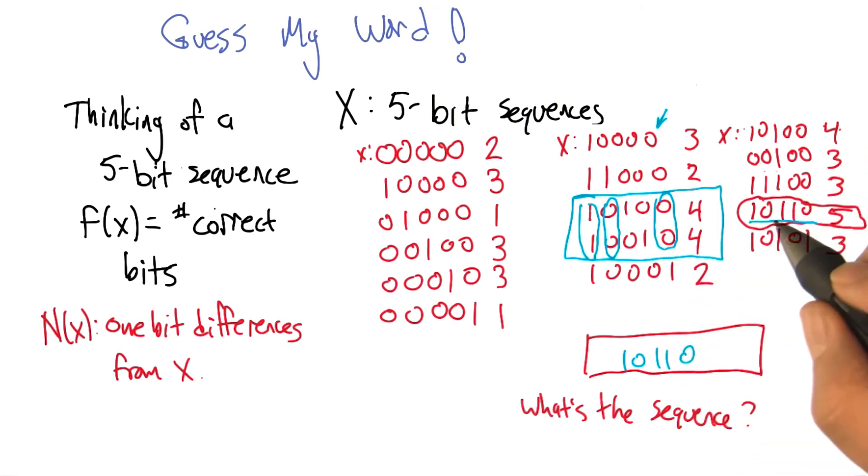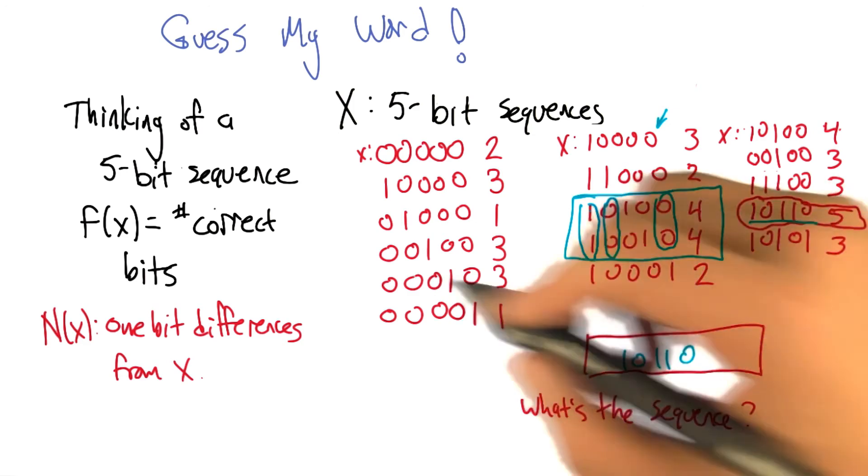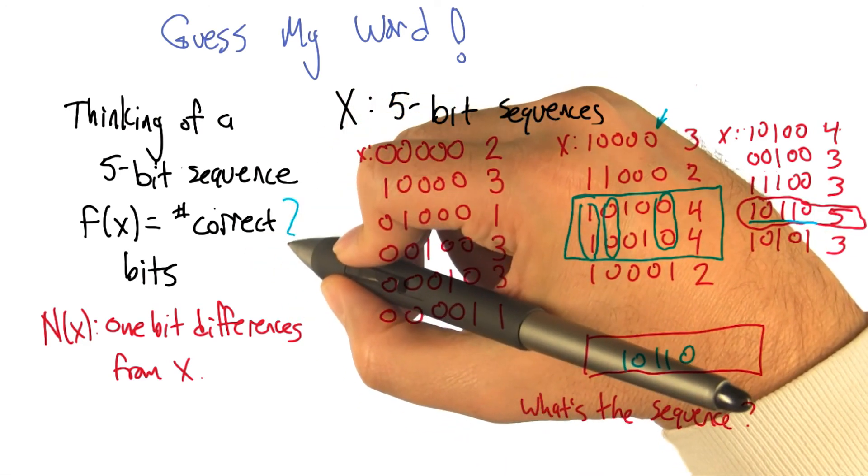Yeah, we would have had to have done this last step to find that one of them has a score of five. And then we would have had to have done that step again to make sure that there wasn't anything locally better than five. Because we wouldn't have known that if we didn't have a semantic understanding of the fitness function.